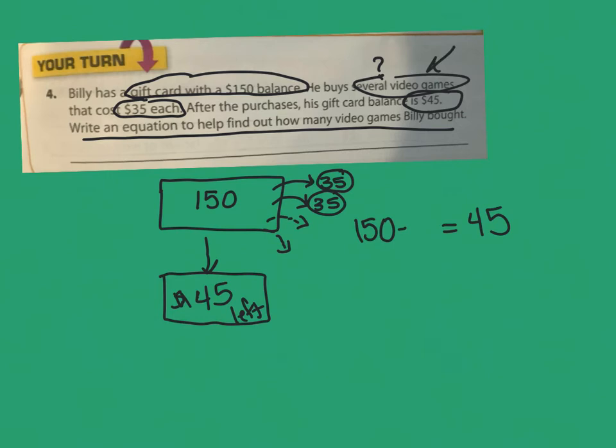And $35 came out of there an unknown amount of times. We'll have to give it a variable. Video game amount of times. However many video games he bought. So, let's let, what variable do we want to give to video games? Let X equal the video games. How many video games he bought.